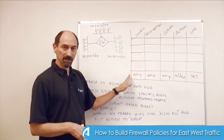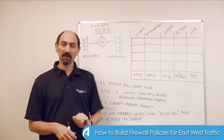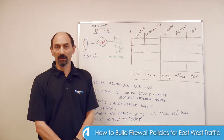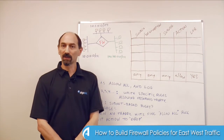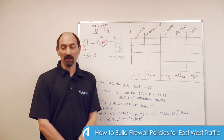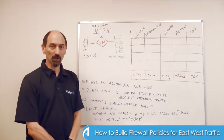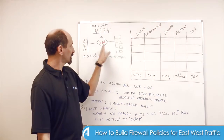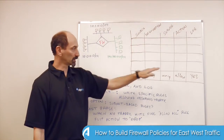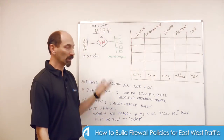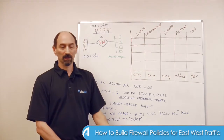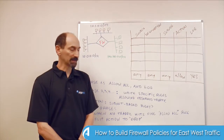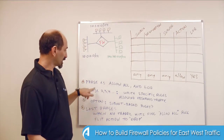By doing this, you're not breaking any connections that you need to allow, because this is a rule that allows everything. So you can place it in a production network quite safely and it will not stop connectivity that you need. You place the firewall and configure it with this very broad rule with logging turned on, and you let it run for a while — a couple of days, a week, as long as it takes to generate meaningful statistics. That's our phase one.